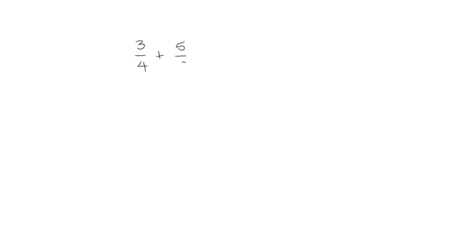Looking at another one: 3 fourths plus 5 eighths. Before we draw a number line, we have to decide if the sum will be between 0 and 1, or 1 and 2. We see 3 fourths is greater than 1 half, and 5 eighths is greater than 1 half. So if we add two fractions that are both greater than 1 half, we know our sum is going to be greater than 1, and we need to draw a number line from 0 to 2.